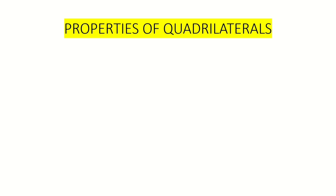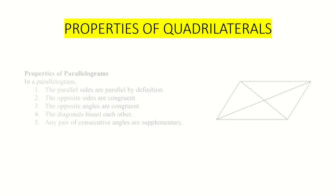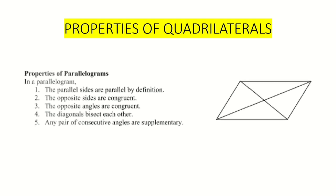To start our lesson, let's try to recall the different properties of quadrilaterals. For the properties of a parallelogram: number one, the parallel sides are parallel by definition; number two, opposite sides are congruent; number three, the opposite angles are congruent; number four, the diagonals bisect each other.